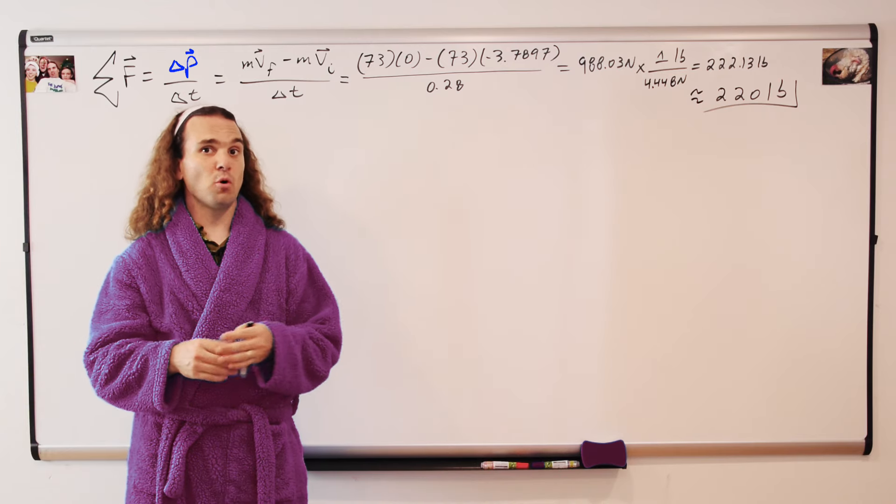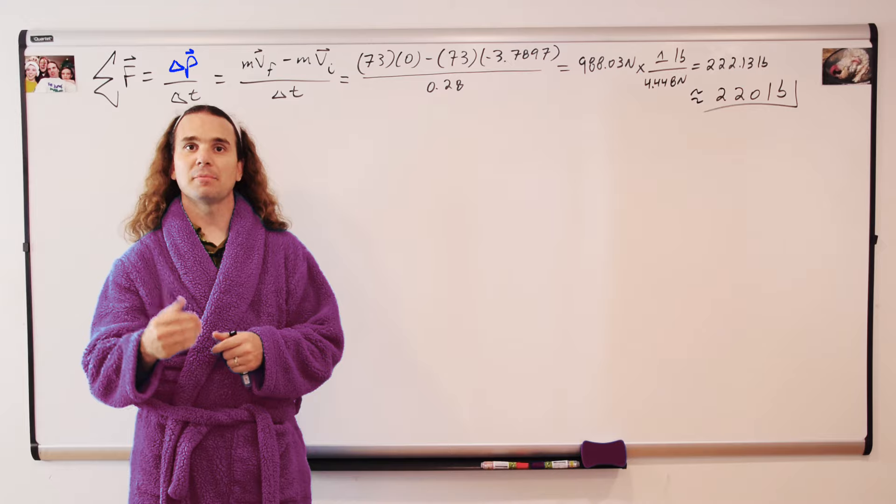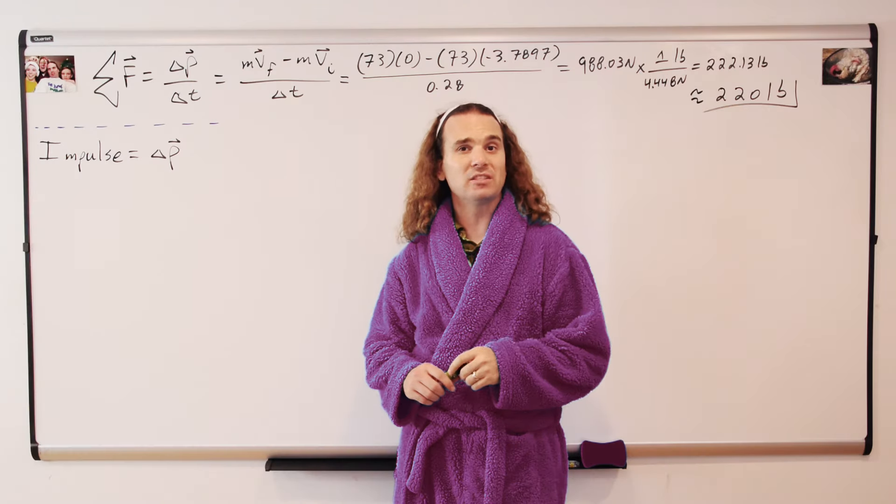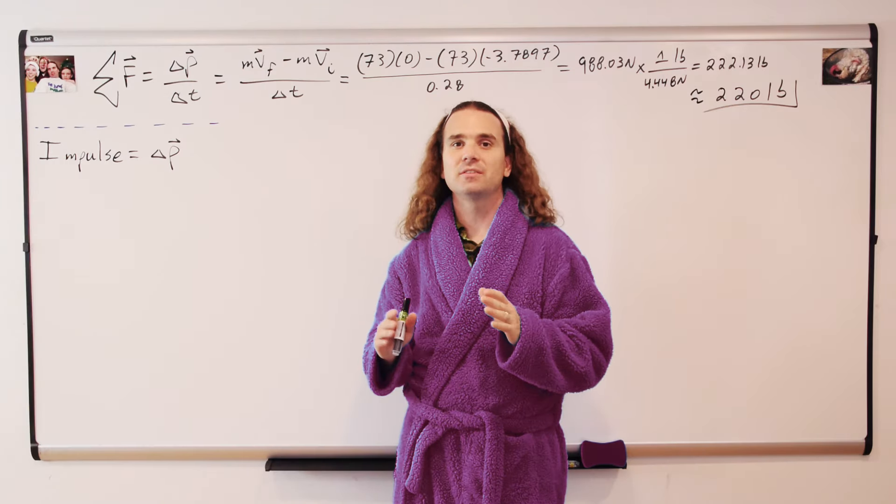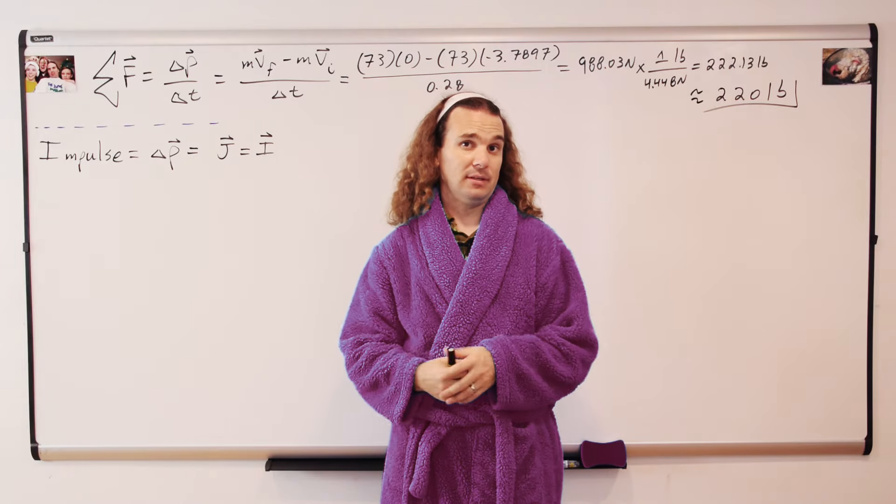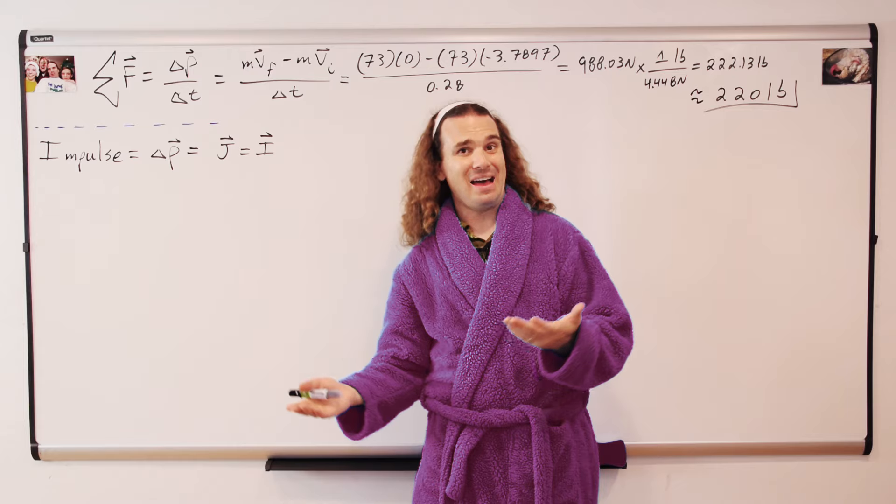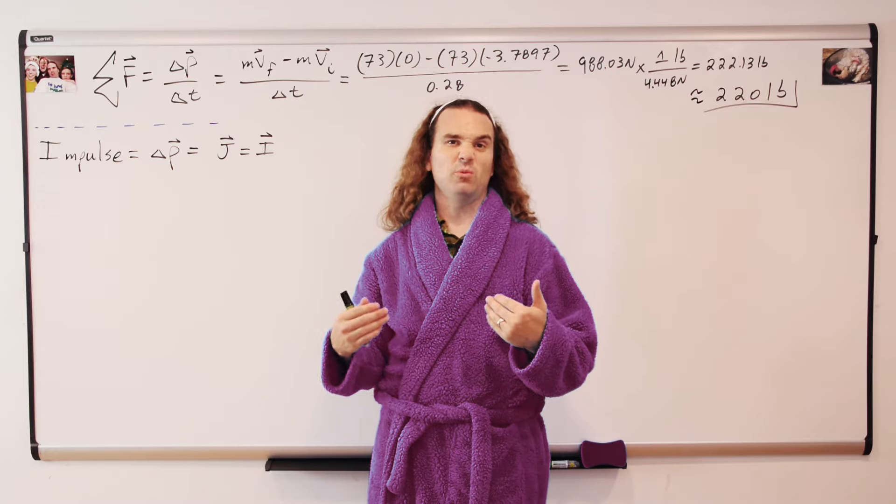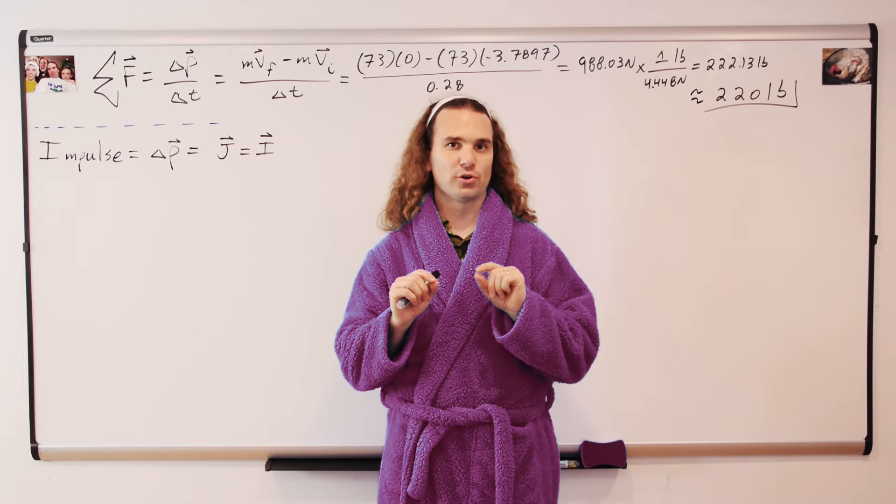Which is why change in momentum is given a special name. Change in momentum is called impulse. And the symbol for impulse is capital J or sometimes capital I, which is why I will usually just write out the whole word impulse.